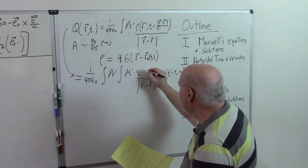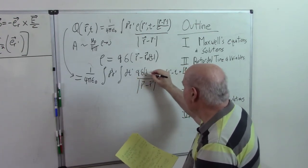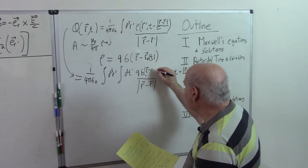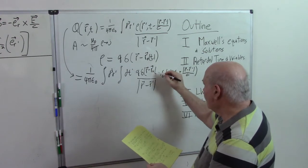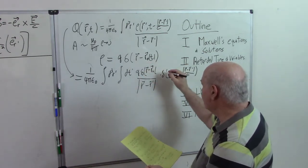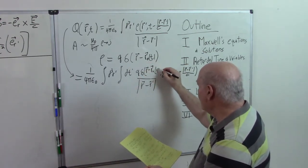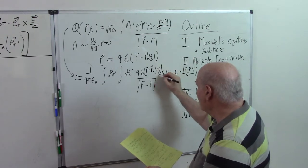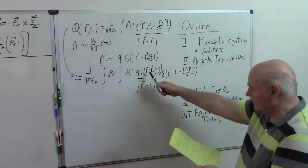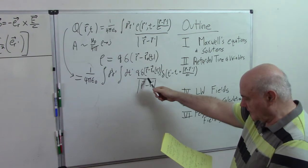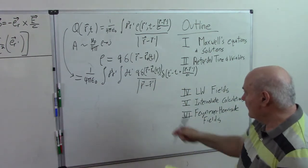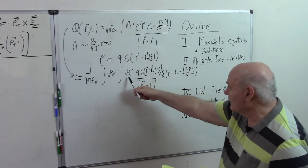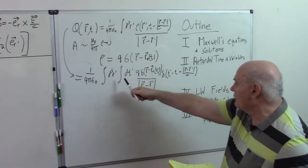Q, delta, r minus r_0. So now we're evaluating rho at t'. So all we did was we substituted in the charge density in this integral. Now we're going to integrate over all space. Instead of doing the time integral, we're going to do the space integral first.